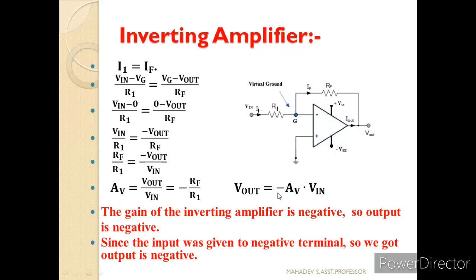You can observe we got the negative symbol — that is the reason we are getting the 180 degree phase shift. Since the input was given to the negative terminal, we got the output as negative. This is the reason we call this the inverting amplifier.